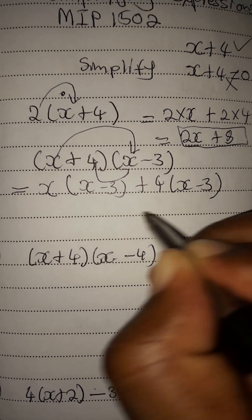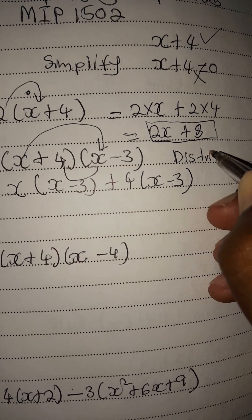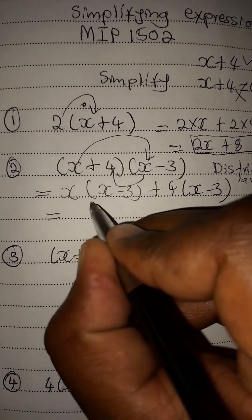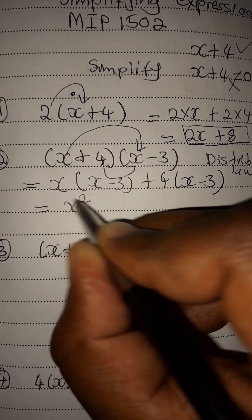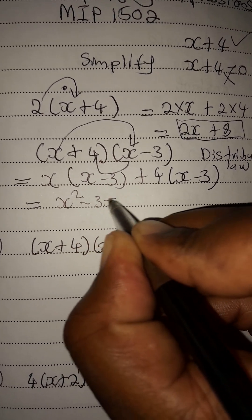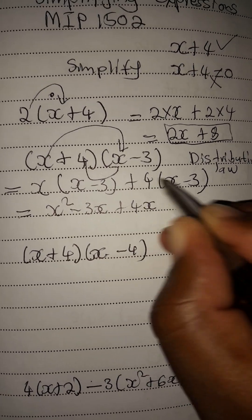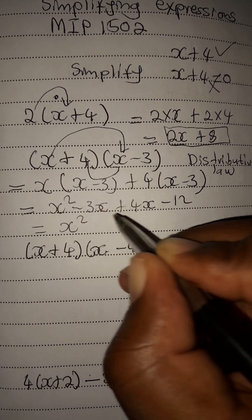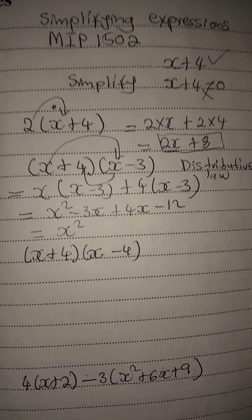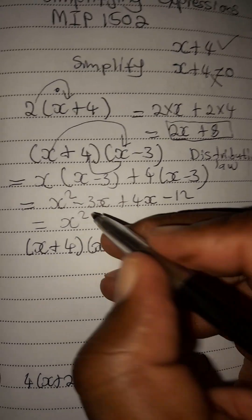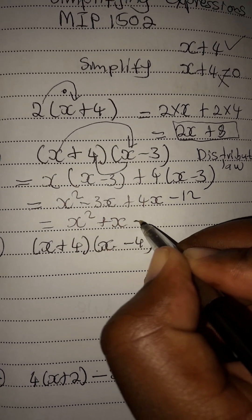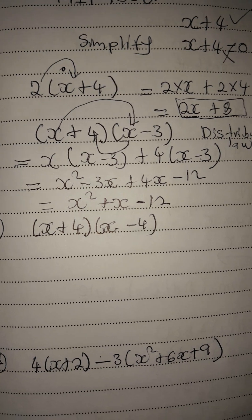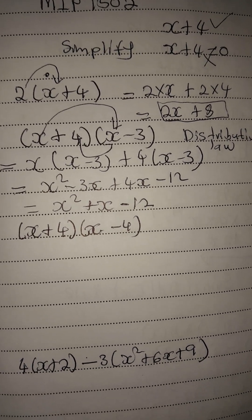Using the distributive property: x times x is x squared, x times negative 3 is negative 3x, plus 4x, and 4 times negative 3 is minus 12. Now we collect like terms: negative 3x plus 4x is the same as 4 minus 3, which is 1. So our result is x squared plus x minus 12.